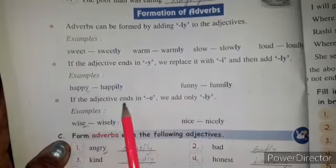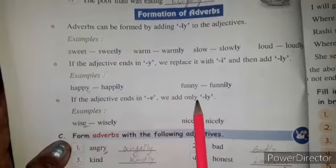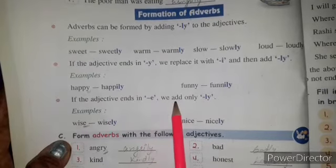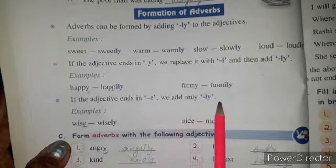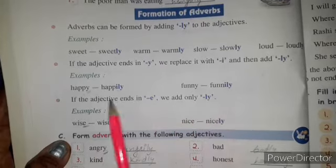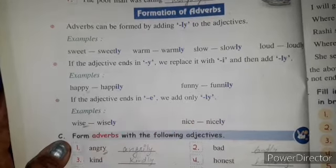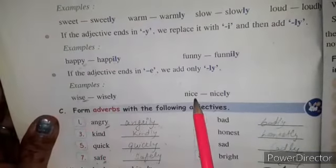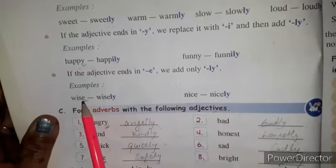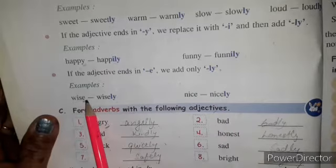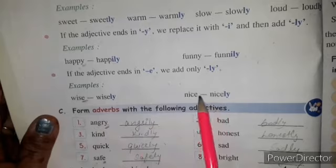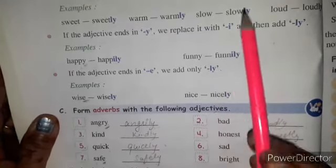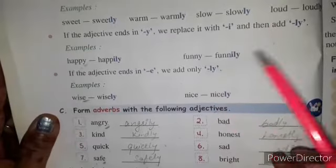Third rule: if the adjective ends in e, we add only -ly. Agar aapka adjective ka end e se hota hai, toh simply e ke baad ly add karna hai.